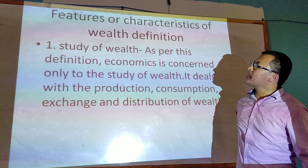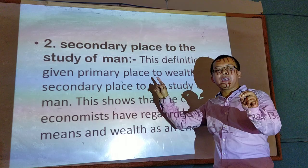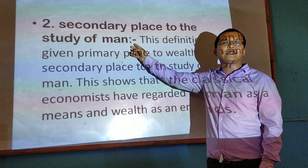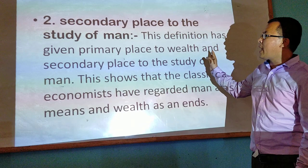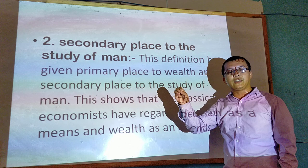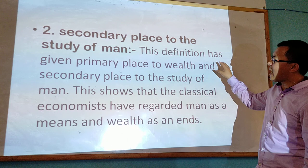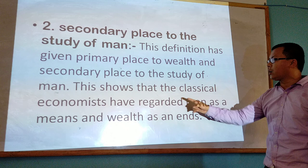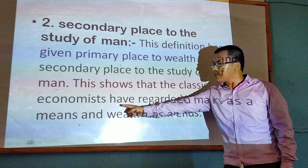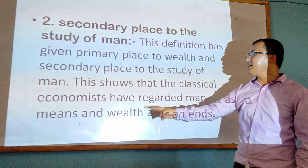The next feature is the secondary place given to the study of man. Adam Smith gave first priority to the study of wealth and only a secondary place to mankind. According to his book 'Wealth of the Nation,' he gave more importance to wealth and second place to mankind. All classical economists such as J.B. Say and J.S. Mill regarded men as the means and wealth as the end.